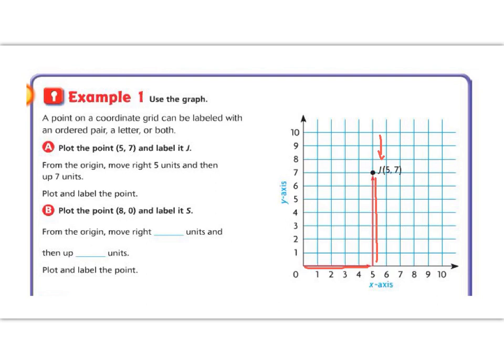B says now we're gonna plot our own point. We are going to go eight, zero. So remember, we're always gonna start at the origin and we're gonna go all the way across to the eight and then up zero. Oh, that means we're all done. So our point is right here on the x-axis. We're going to label it eight, comma, zero. And it also said that we were going to label it S. So now from the origin, we're going to move right eight units and then we moved up zero units and then we plotted and labeled our point. Point S is at eight, comma, zero.